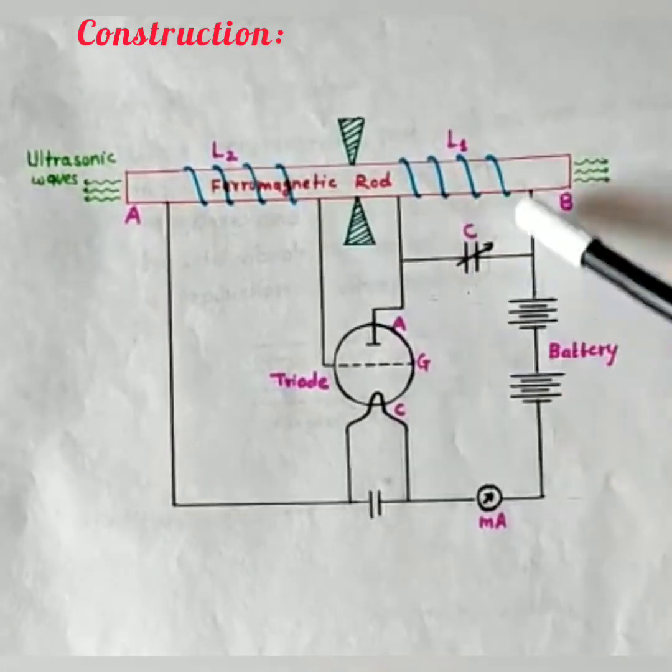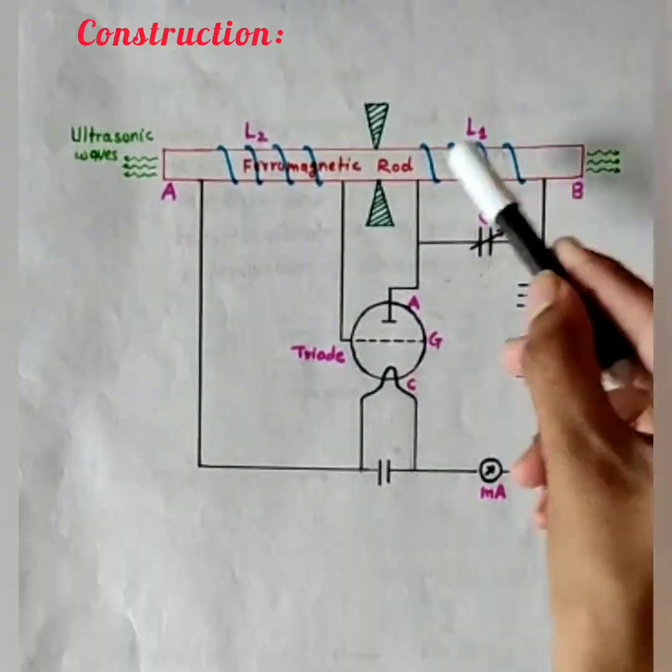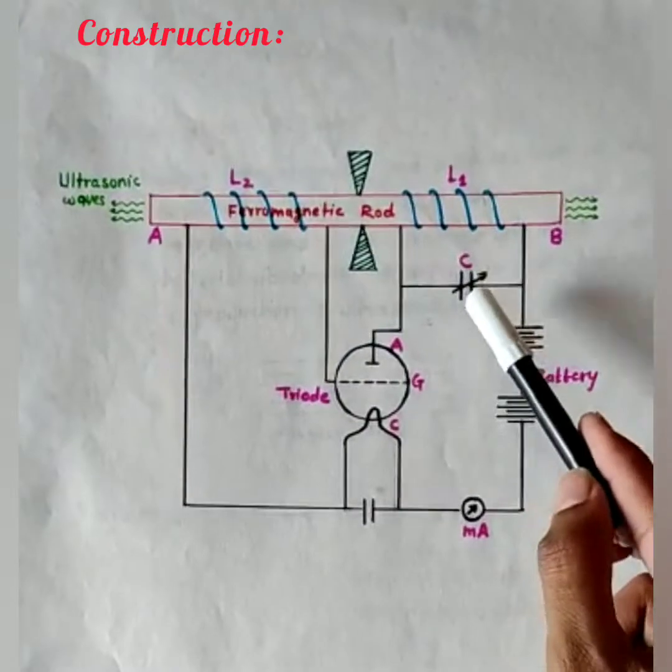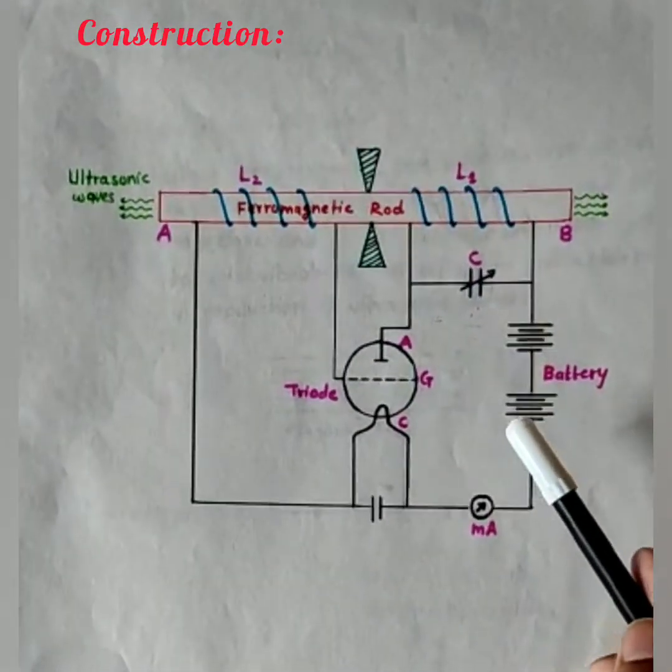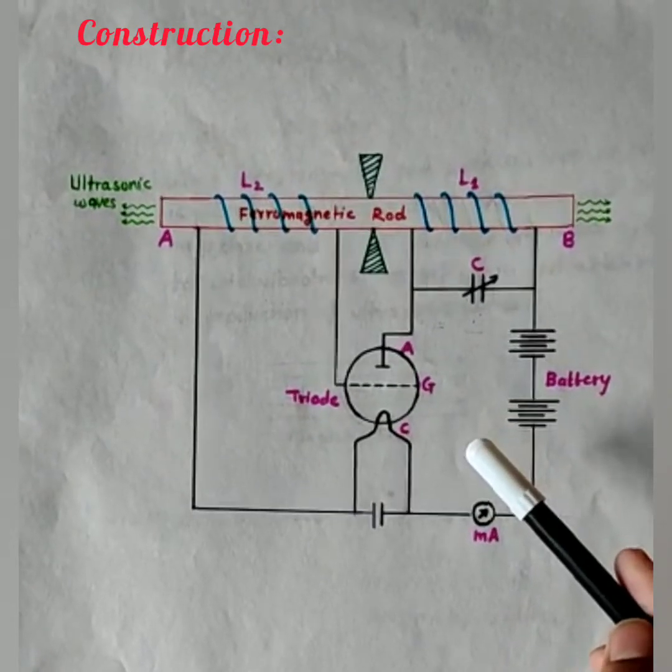This parallel combination is connected to the collector of the triode. This parallel combination of L1 and C decides the frequency of the circuit. Now, this is the construction of the magnetostriction oscillator.